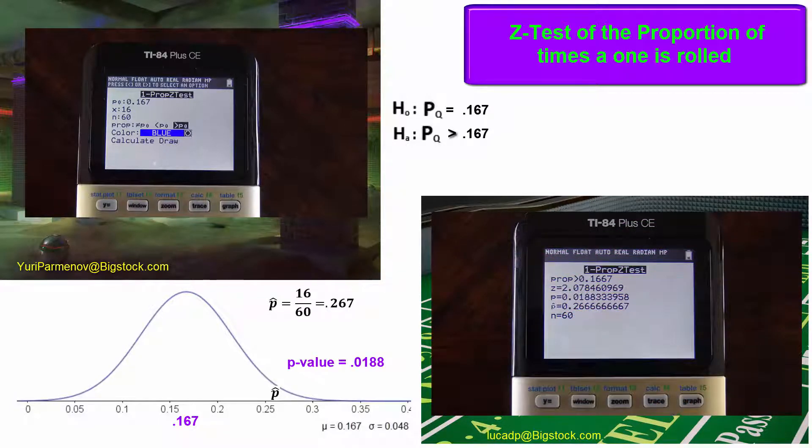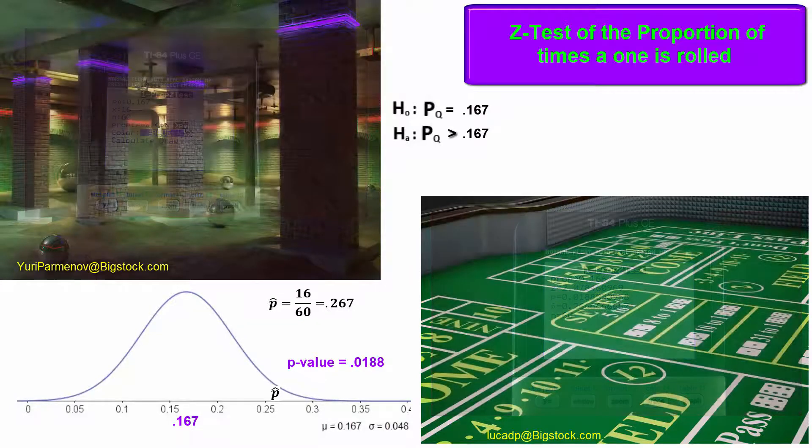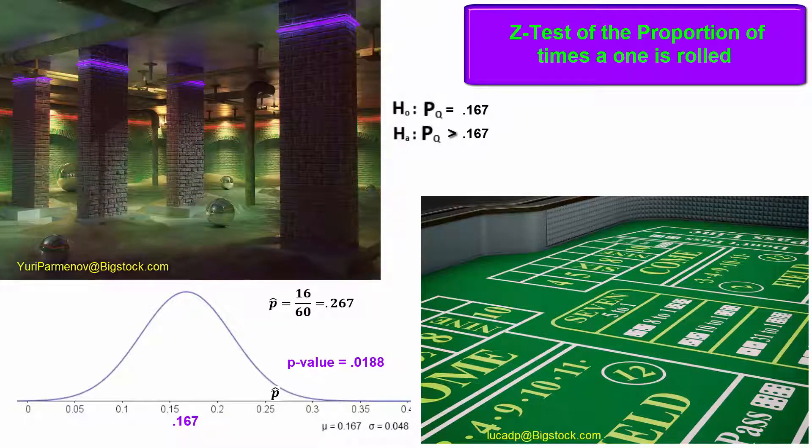Like the z-test for means, this tells me that if the null were true and your die was fair, I'd only get a result at least this extreme in less than two percent of samples. Hence, I reject the null. The evidence suggests your die is bad and one comes up too frequently.